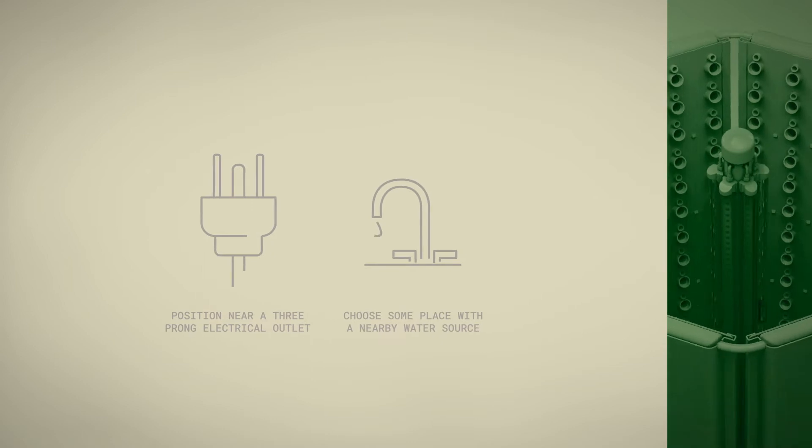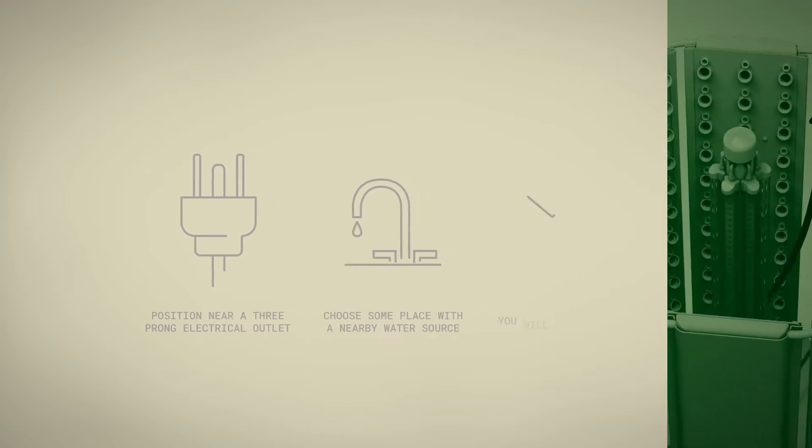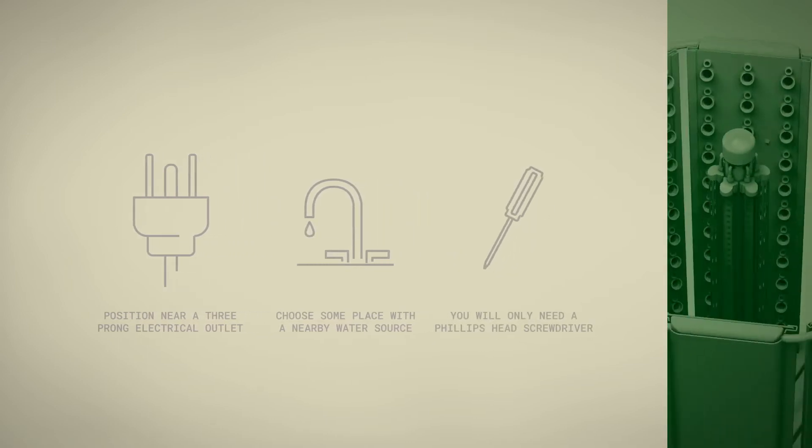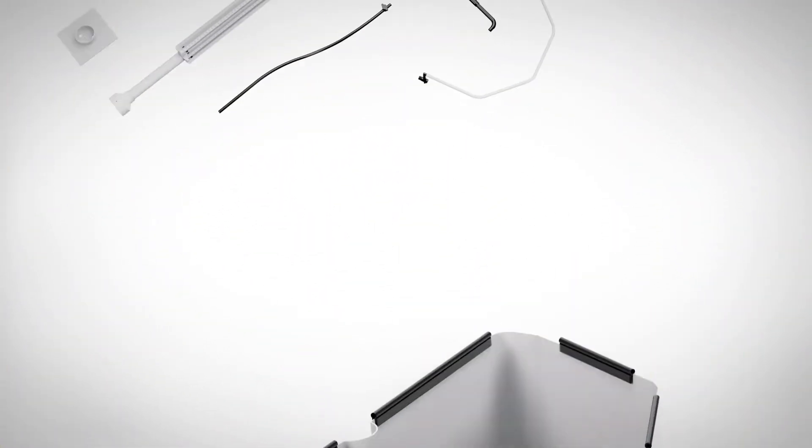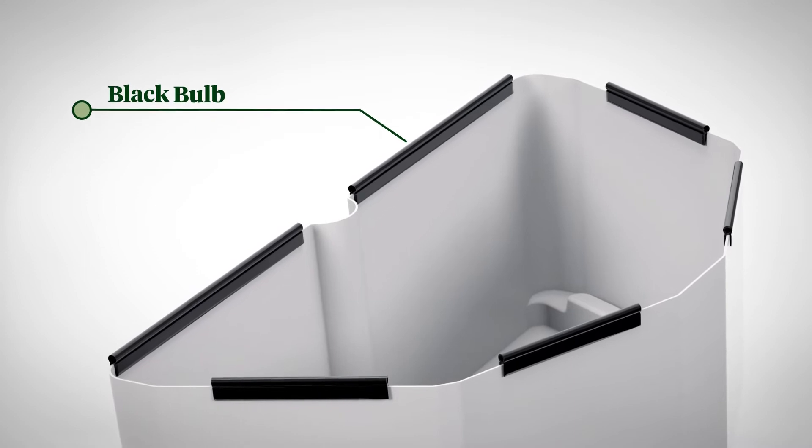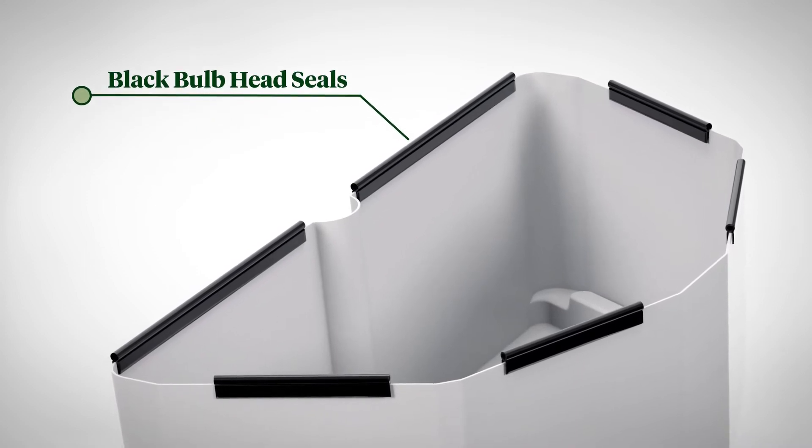It's a good idea to choose someplace with a nearby water source. For assembly you will only need a Phillips head screwdriver. We recommend unpacking both the FlexFarm boxes before you start. Please note the black bulb head seals on the tanks are not packaging and should remain on the tanks.